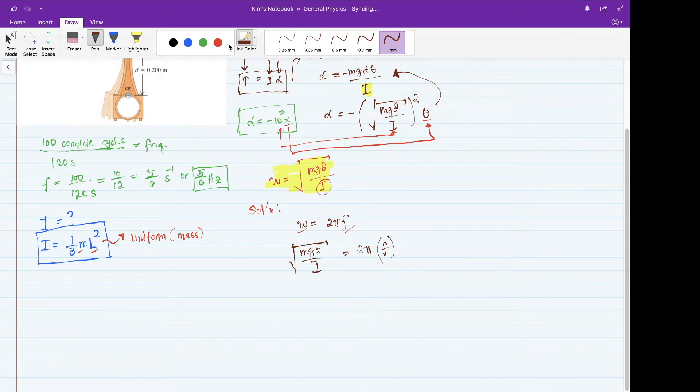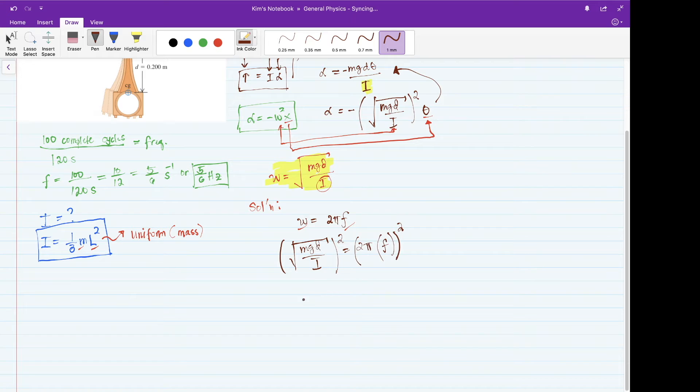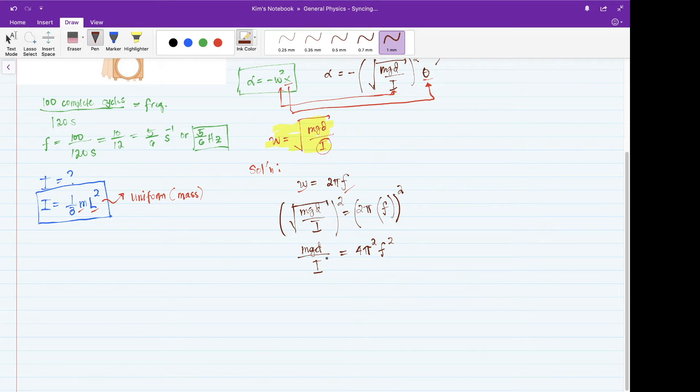From this expression, then you'll have omega. You replace omega with the square root of MgD all over I, and then you have here 2 pi times frequency. After that, we need to isolate I. For us to isolate I, we need to square both sides. Whatever you do on the right-hand side, you need to do it also on the left-hand side. You are left with MgD over I, and you have 4 pi squared and then F squared.